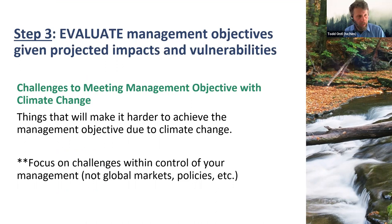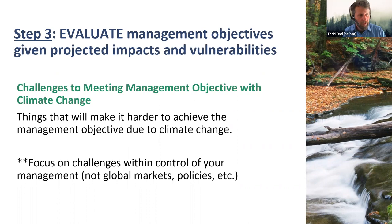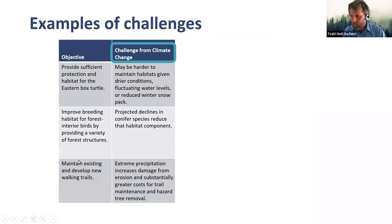The first thing you'll do in step three is identify climate-related challenges to meeting your future management objectives. We'll list ways in which climate change impacts or vulnerabilities make it more difficult to achieve each management objective. For example, warmer temperatures and drier conditions may limit the regeneration of a particular desired tree species, making it more challenging to maintain that species into the future. With both challenges and opportunities, we want to focus on ecological or environmental challenges rather than policy, economic, or other factors.